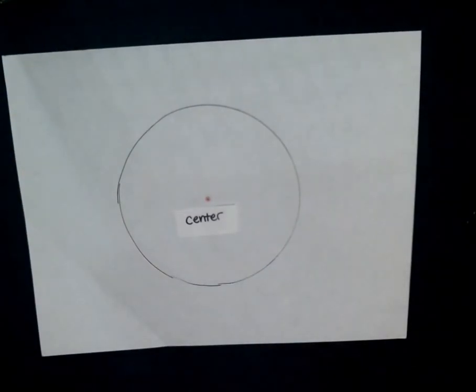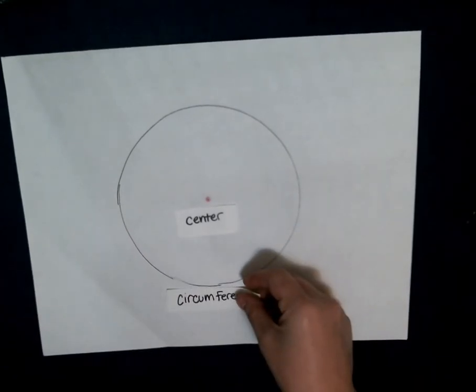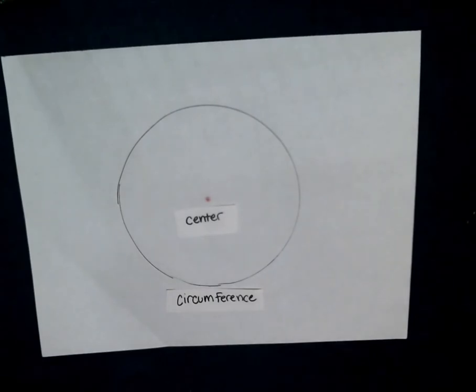However, does the circle have straight lines? No. No friends, it does not. It has just one big curvy line. So we have a special word for this. That's called the circumference of the circle.